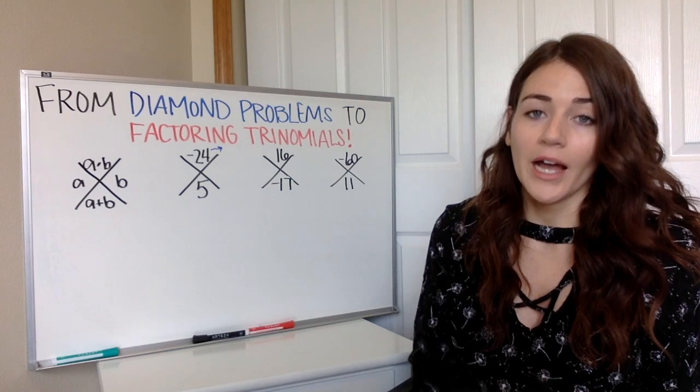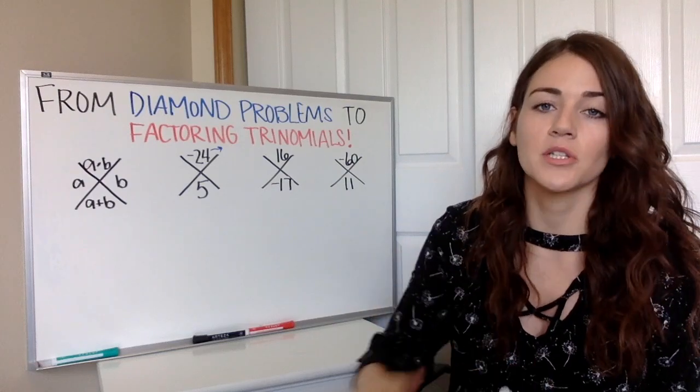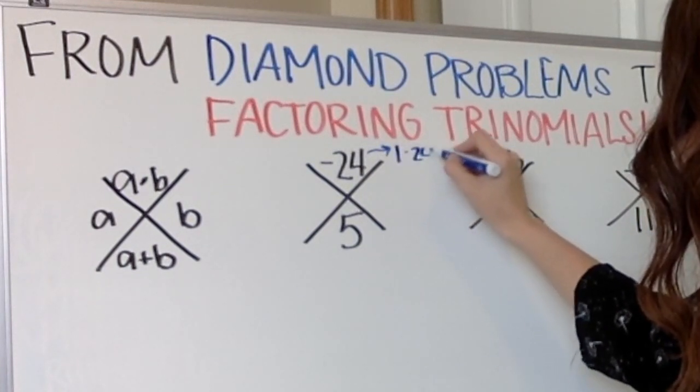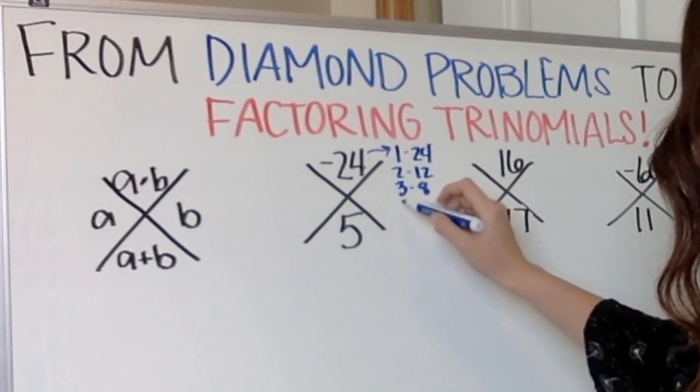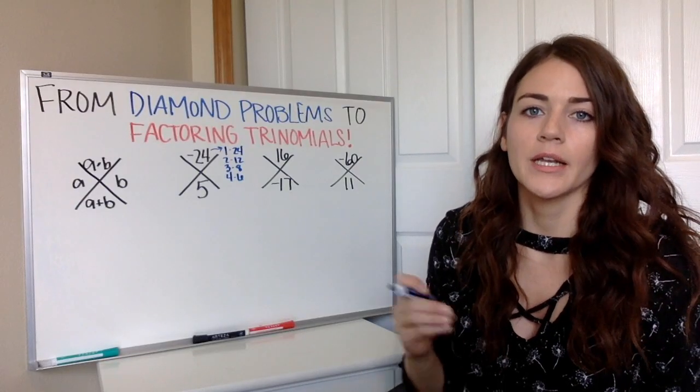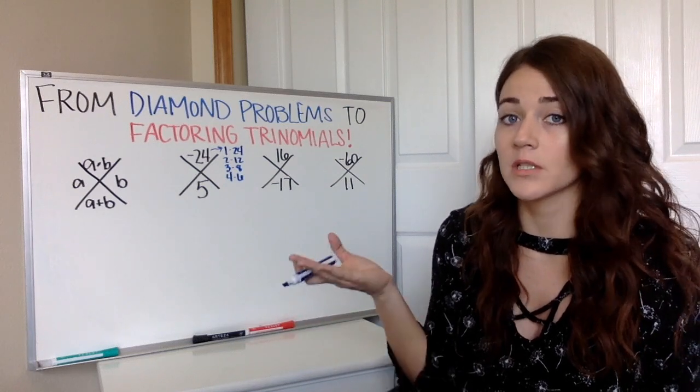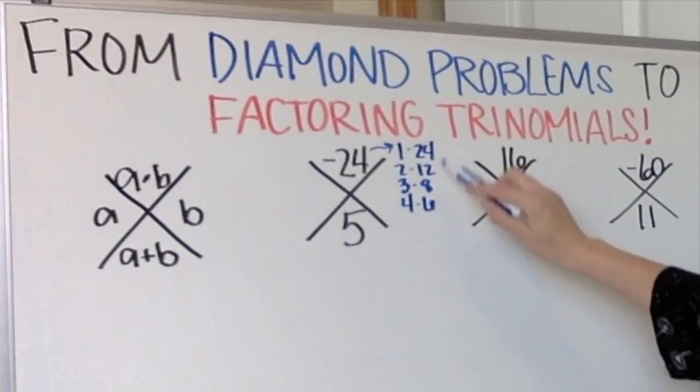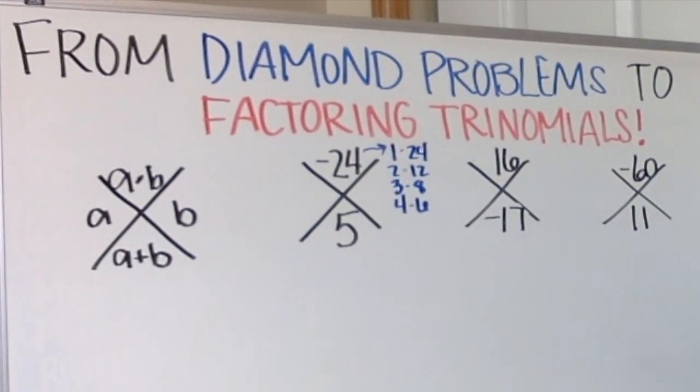So the best strategy I think for this is to start by listing the factors of the number that you know is being multiplied. So we're going to get 1 and 24, 2 and 12, 3 and 8, negative 4 times 6. And I think that's all of them. All right, now remember it's negative. Whenever we multiply to get a negative, that means one's positive and one's negative.